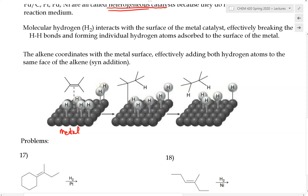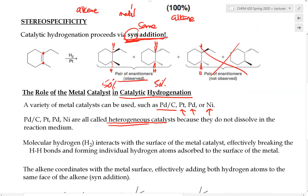The mechanism is as follows: the double bond comes in acting as a nucleophile, picks up one of the hydrogens, producing a carbocation on the other carbon. Then the hydrogen remaining on the metal surface acts as a nucleophile and attacks that carbon. In this case, the two hydrogens are being added to the same side of the double bond because the double bond has to lie planar and orient flat against the metal surface — that is how we end up with this syn addition.